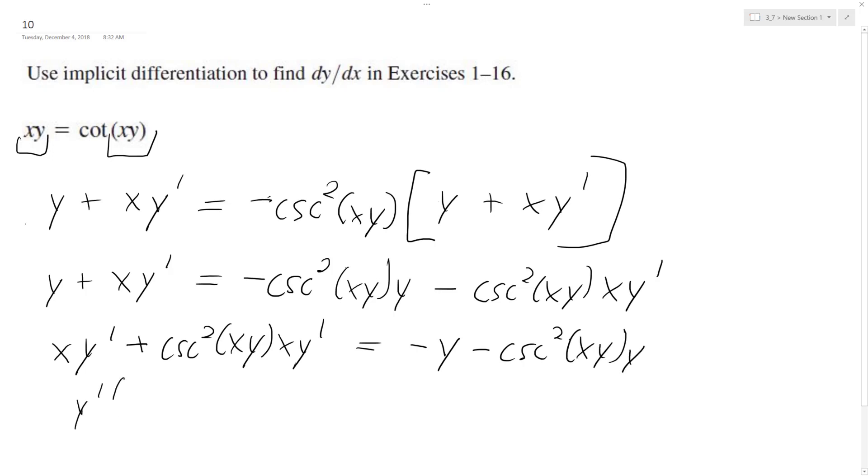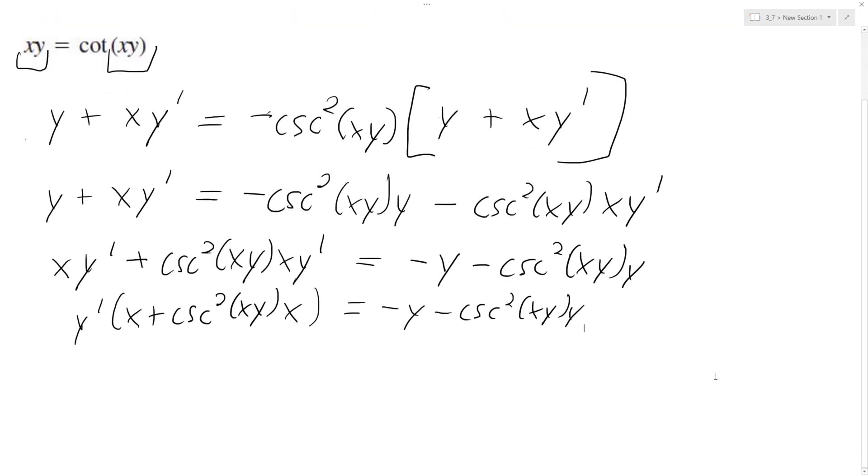y prime, x plus cosecant squared xy. All right, so ultimately what we end up with is y prime is y prime, or dy/dx is equal to negative y.